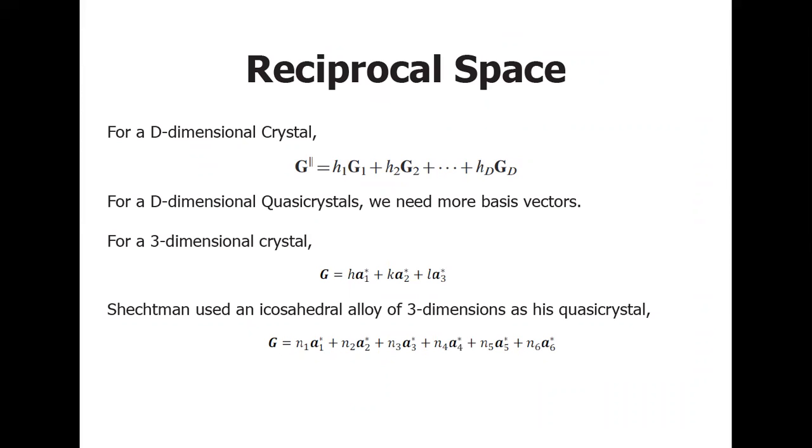This is consistent with our thought experiment earlier. That is, a D-dimensional quasicrystal can be expressed as a crystal of more than D dimensions. In the case of the aluminum-manganese alloy used by Shechtman, his three-dimensional quasicrystal can be thought to be a projection of a six-dimensional cubic lattice crystal.